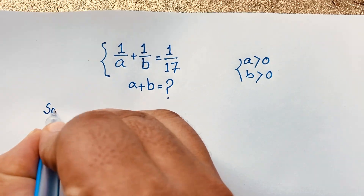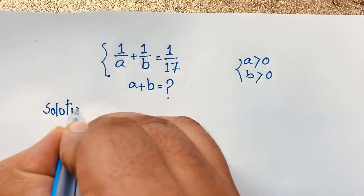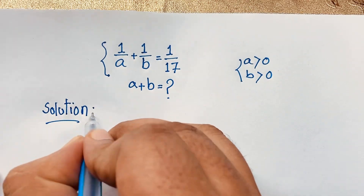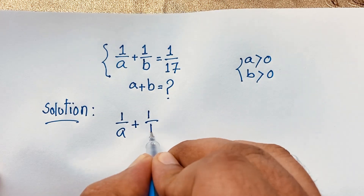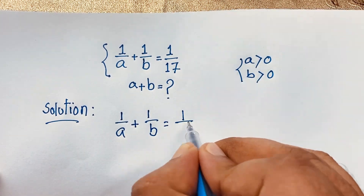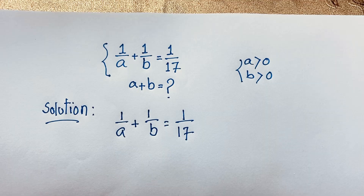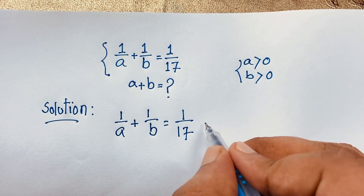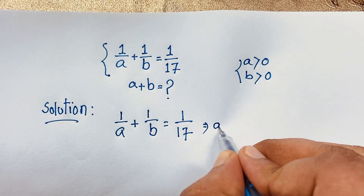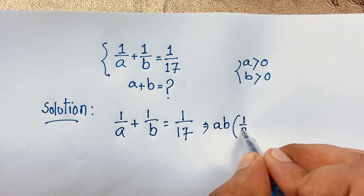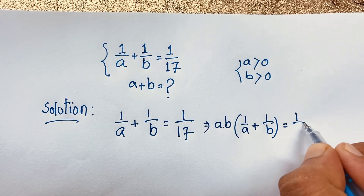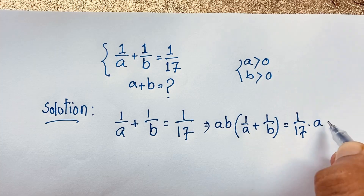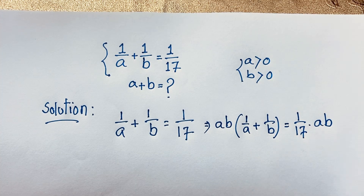So our math problem is: 1 over A plus 1 over B is equal to 1 over 17. Now I multiply both sides by AB. So this expression will be AB times (1 over A plus 1 over B) is equal to 1 over 17 times AB. I multiply both sides by AB.